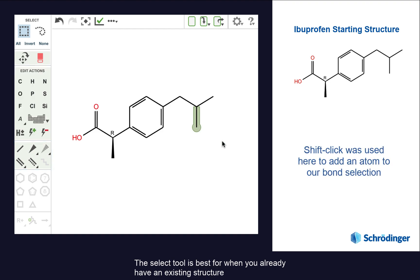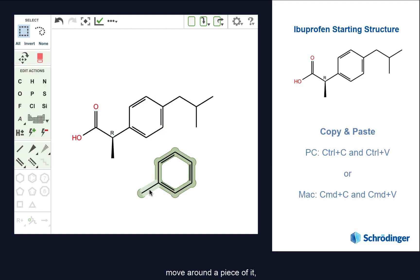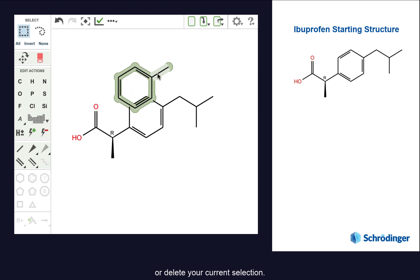The select tool is best for when you already have an existing structure and you want to copy and paste part of it, move around a piece of it, or delete your current selection.